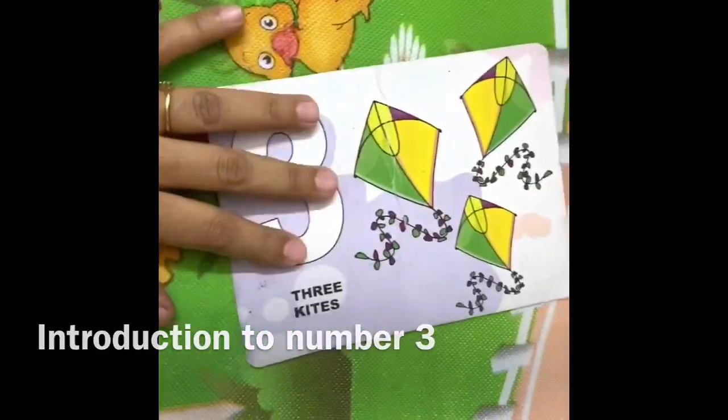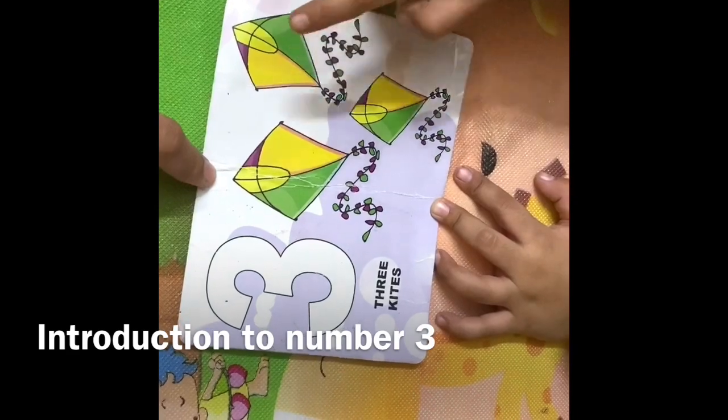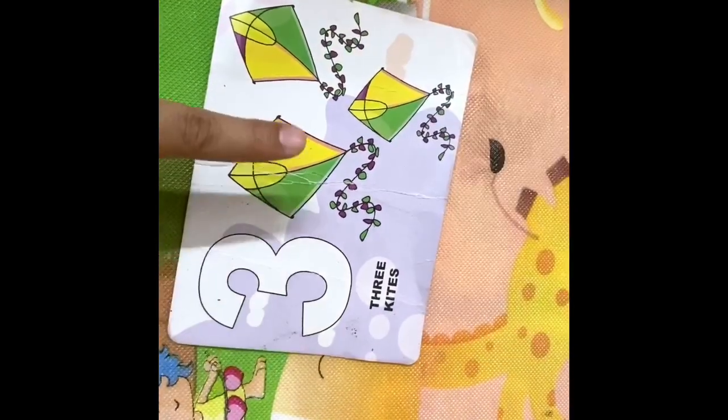How many? Count: 1, 2, 3. So there are 3 kites, right?